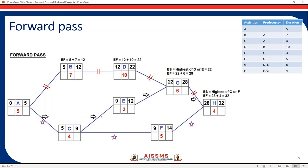Activity C acts as a predecessor for two activities: activity E and activity F. We'll calculate the early start and early finish for both. For E and F, the early start will be the early finish of the predecessor, which is nine. So early start for both E and F is nine. Early finish for E: nine plus three equals twelve. Early finish for F: nine plus five equals fourteen.